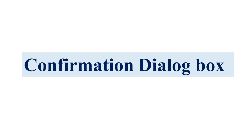Hey everyone, welcome to my channel. Today we are going to discuss the confirm dialog box in JavaScript. There are 3 types of dialog boxes in JavaScript: the first is the alert dialog box, the second is the confirm dialog box, and the third is the prompt dialog box. In the previous lecture we already discussed the alert dialog box, and today we will discuss the confirm dialog box — what it means and an example program.